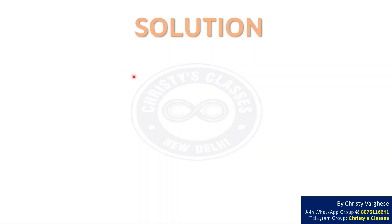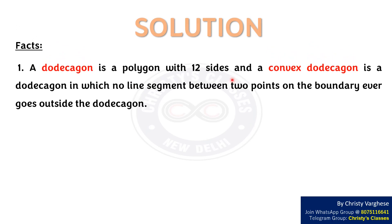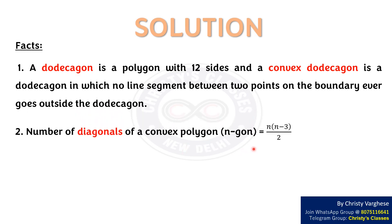A dodecagon is a polygon with 12 sides, and a convex dodecagon is one in which no line segment between two points on the boundary ever goes outside the dodecagon. The number of diagonals of a convex polygon equals n(n − 3) / 2.